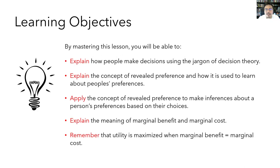Here are today's learning objectives. By mastering this lesson, you should be able to: 1. Explain how people make decisions using the jargon of decision theory. 2. Explain the concept of revealed preference and how it is used to learn about people's preferences. 3. Apply revealed preference to make inferences about a person's preferences based on their observed choices. 4. Explain the meaning of marginal benefit and marginal cost. 5. Remember that utility is maximized when marginal benefit equals marginal cost, because we'll be using that concept a lot.